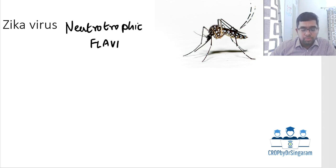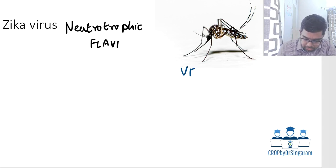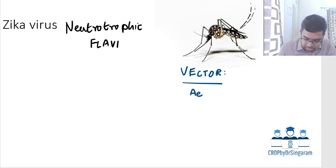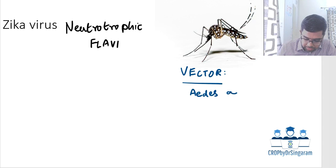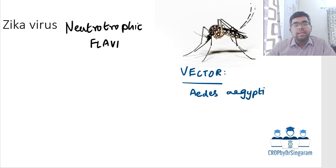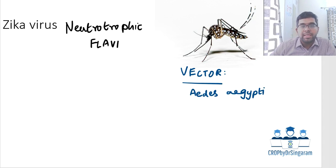Zika is a vector-borne disease and the vector is the well-known Aedes aegypti mosquito, which is also associated with the transmission of other infectious diseases like dengue fever, chikungunya, and yellow fever.